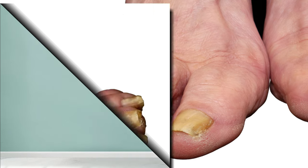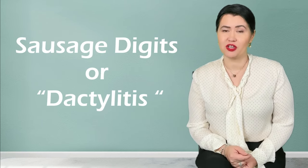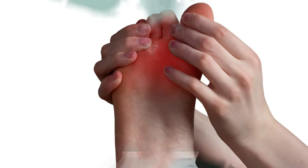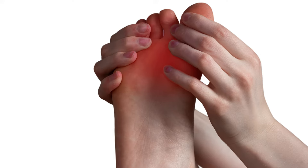The most common sign of psoriatic arthritis in the feet is sausage digits, or dactylitis. One of the digits will swell up, look like a sausage, and can be painful. Although it may look like gout, usually the pain is not as severe in patients with psoriatic arthritis. The toes can look diffusely swollen, and the swelling can go up and down.